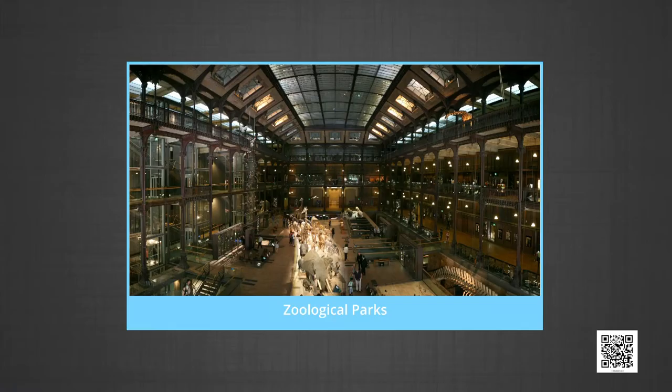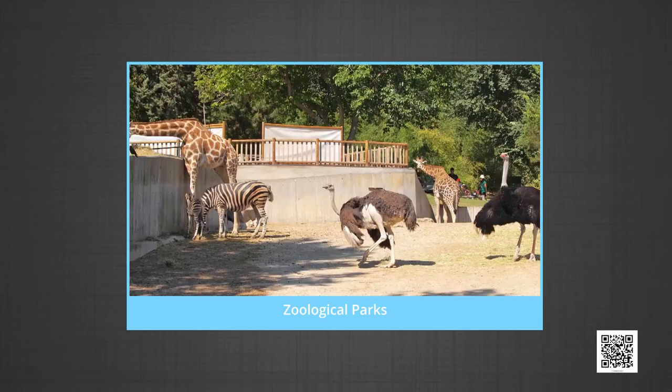Zoological parks are places where wild animals are kept in enclosures that provide a natural environment. The scientific purpose of a zoo is to breed animals which are otherwise facing a threat in their natural habitat, due to developmental activity, poaching and habitat destruction.